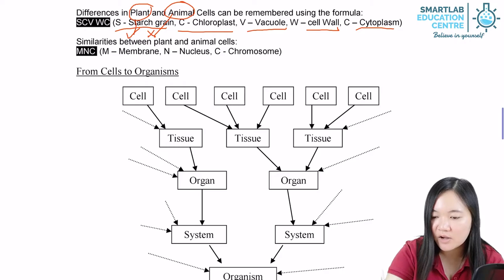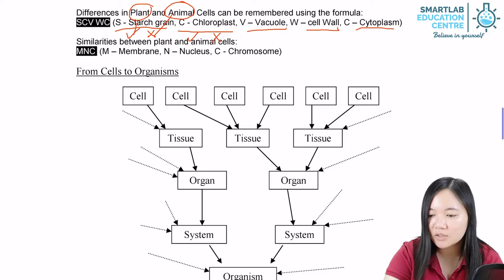Chloroplasts. Plant cells have chloroplasts. Animal cells do not.